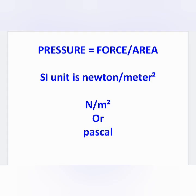The SI unit of force is Newton and the SI unit of area is meter square. So, pressure is force per area. Therefore, the SI unit of pressure can be written as Newton per meter square, or we can write it as N/m², which is also called Pascal.